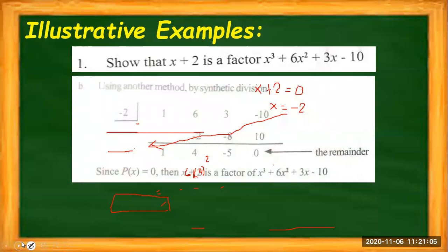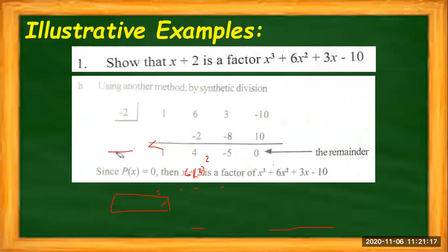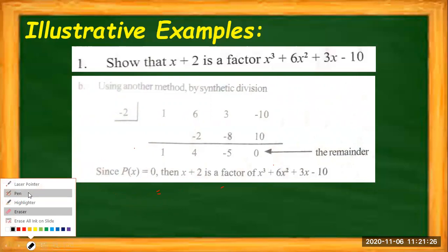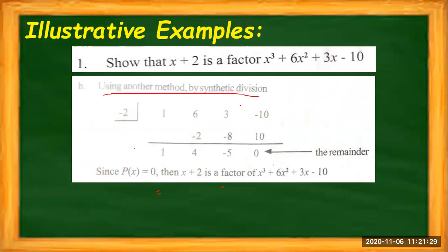We can also use synthetic division in the Factor Theorem — the process is the same. We just need to prove that the remainder is 0. Using synthetic division with X = −2, it will give us a remainder of 0. Same process, same results.